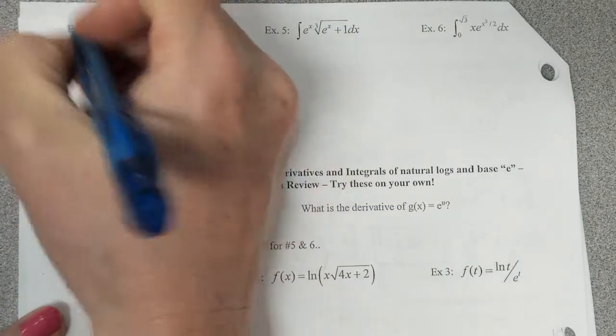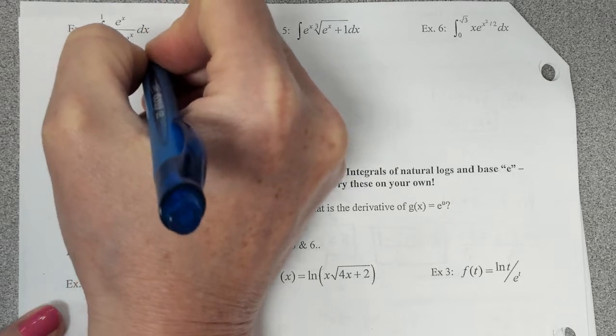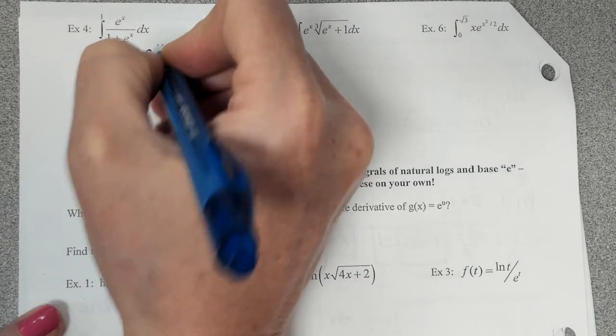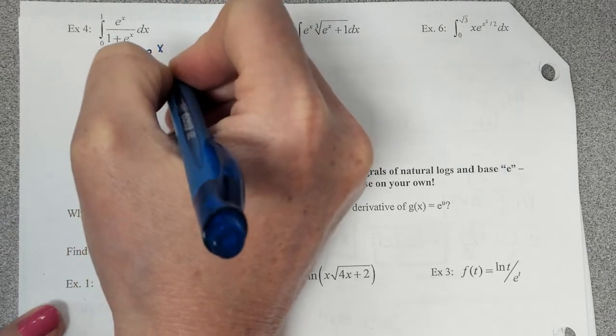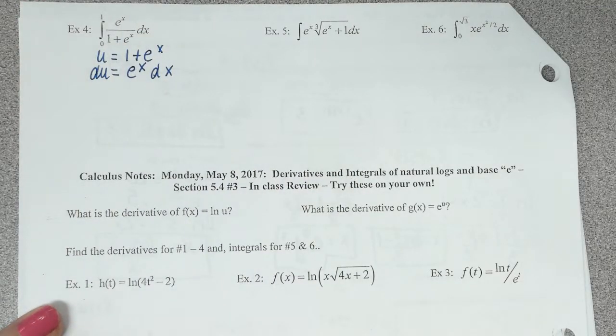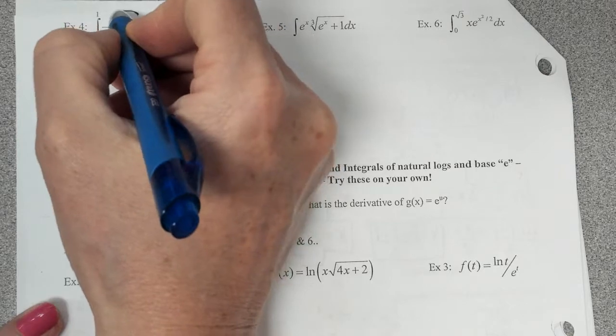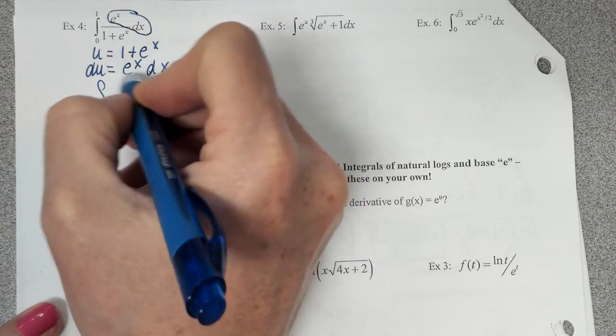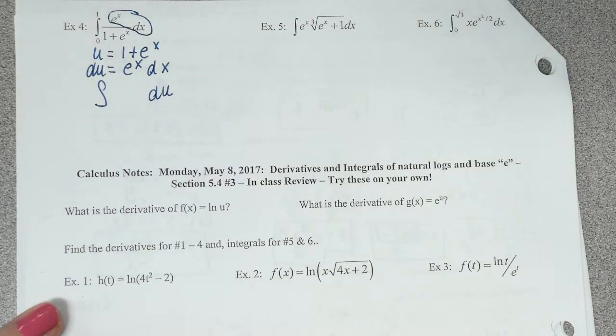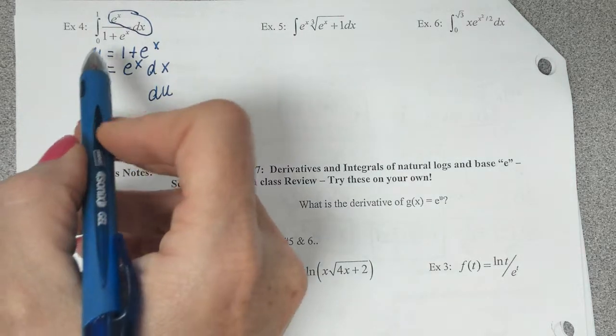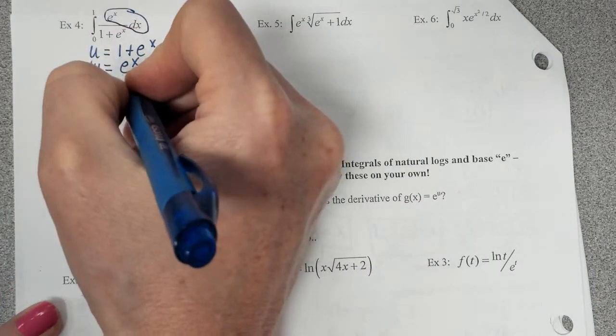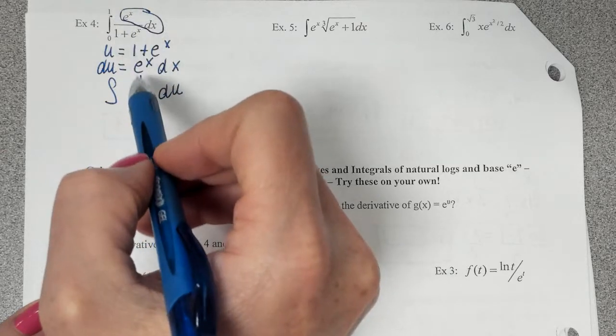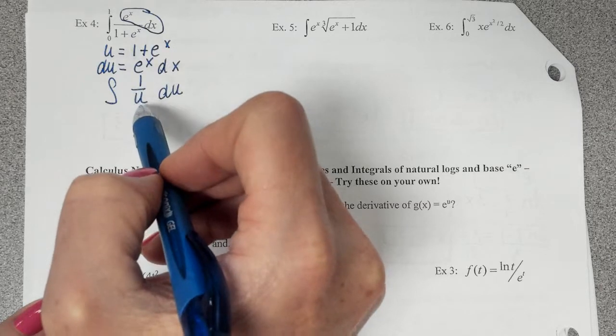Does anyone have an idea of what we could let u equal? 1 plus e to the x. You're correct. If we let u equal 1 plus e to the x, that derivative of 1 is 0. The derivative of e to the x is e to the x dx. So look at why that was a good choice. Here's e to the x dx. So that's going to just be du. What does this part turn into now? 1 over u. Just 1 over u, guys.